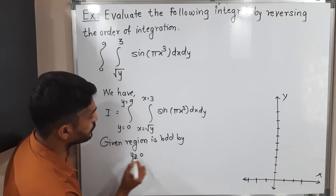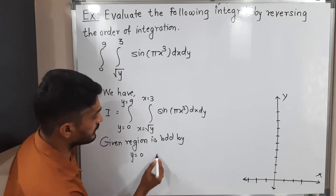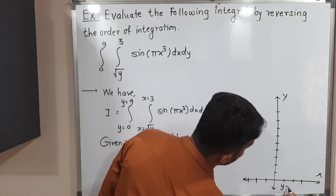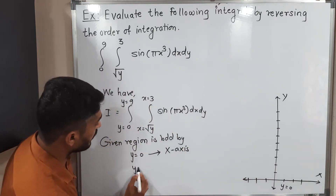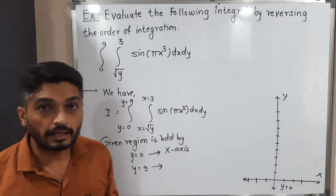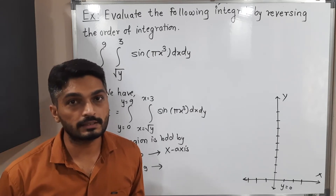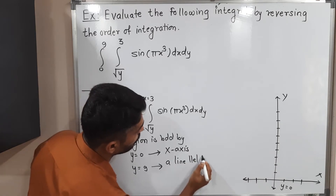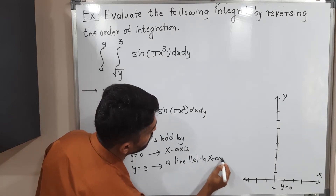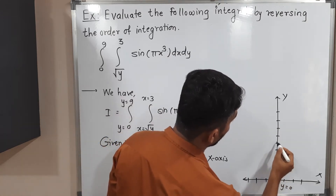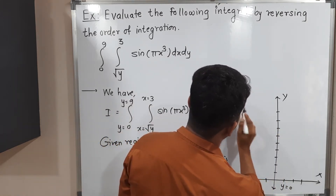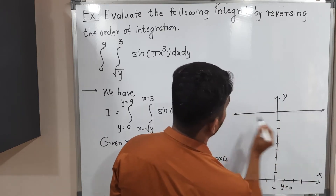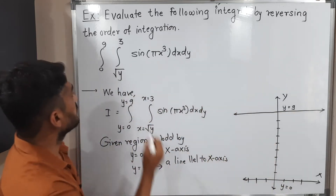First, y = 0, which is the equation of the x-axis. Next is y = 9, which is a line parallel to the x-axis passing through y = 9. Let me draw that line — counting up: one, two, three, four, five, six, seven, eight, nine — so this is the line y = 9, parallel to the x-axis.